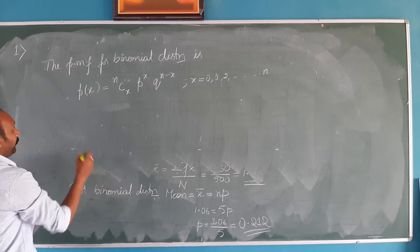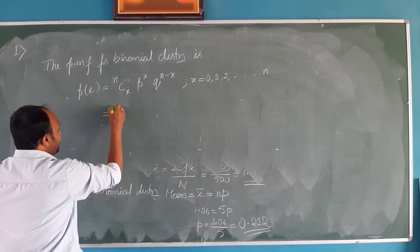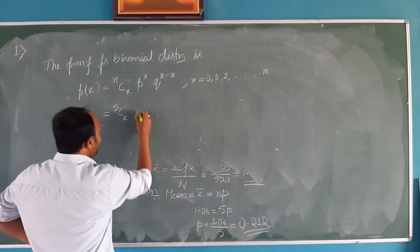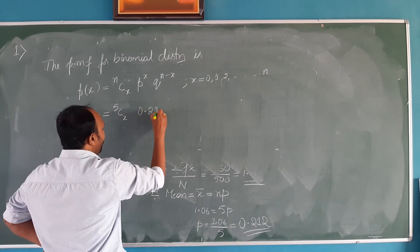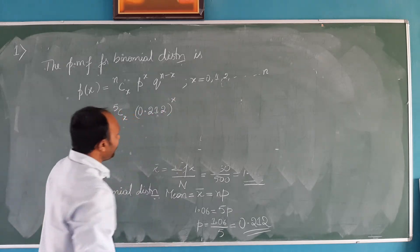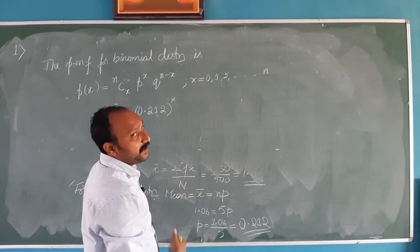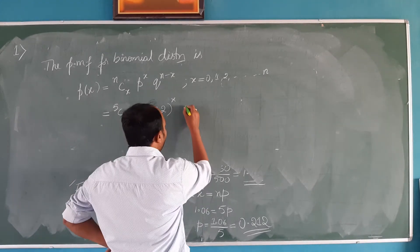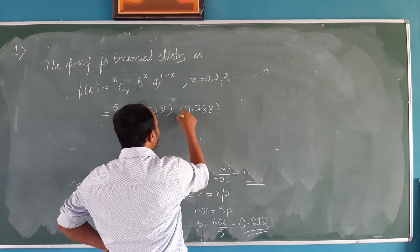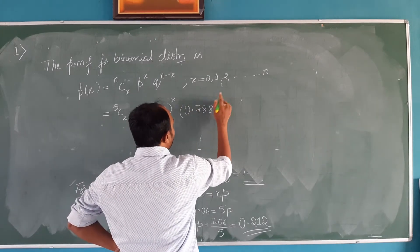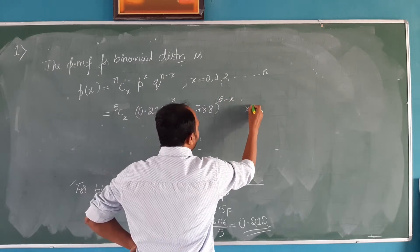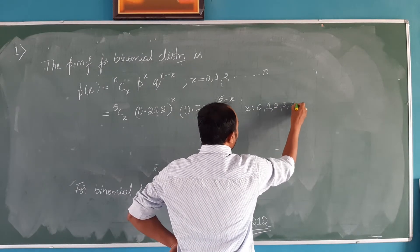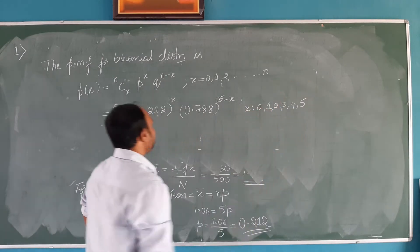But for our problem, it is 5Cx * (0.212)^x * (0.788)^(5-x), where x can take values 0, 1, 2, 3, 4, 5. This is the customized PMF for our problem.